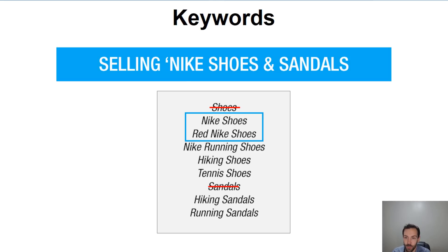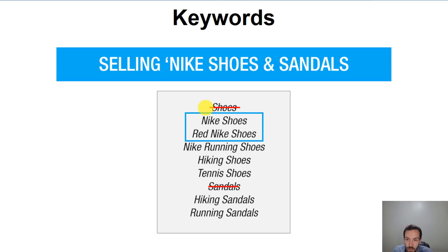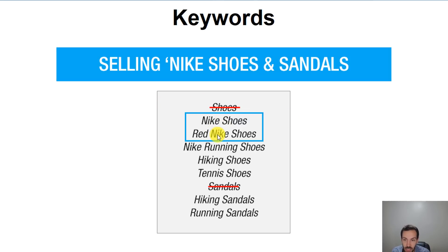A better example would be: imagine we're selling Nike shoes. If we were to just have 'shoes' as our keyword phrase, that one-word keyword phrase isn't particularly good — it's called a head-based keyword and it's too broad. You could be talking about all different types of shoes. 'Nike shoes' — yes, we've got a good keyword there. 'Red Nike shoes' — well, it's slightly different. The 'Nike shoes' is generic, but 'red Nike shoes' has a level of specificity. We could show a relevant ad to that specific keyword phrase.